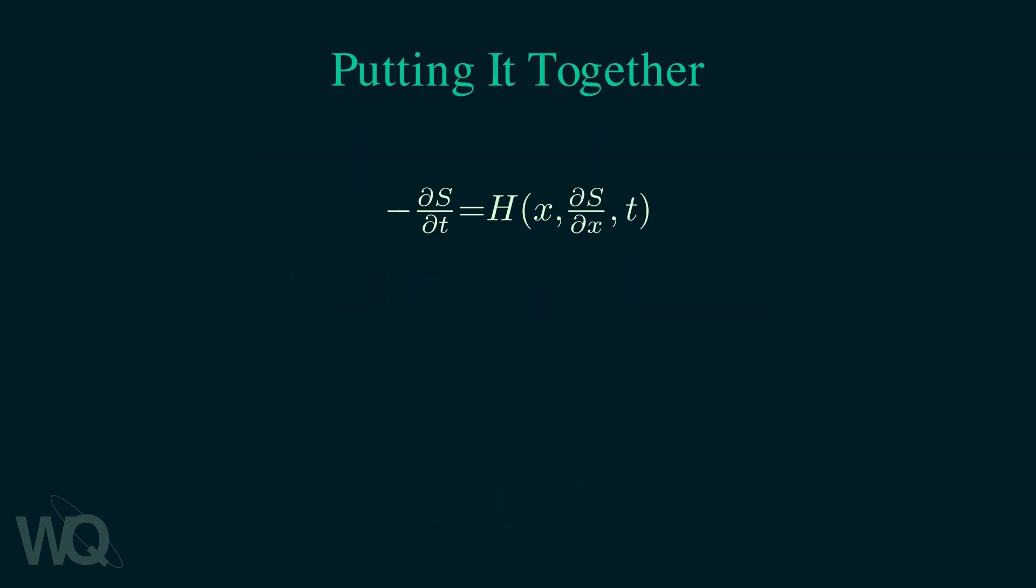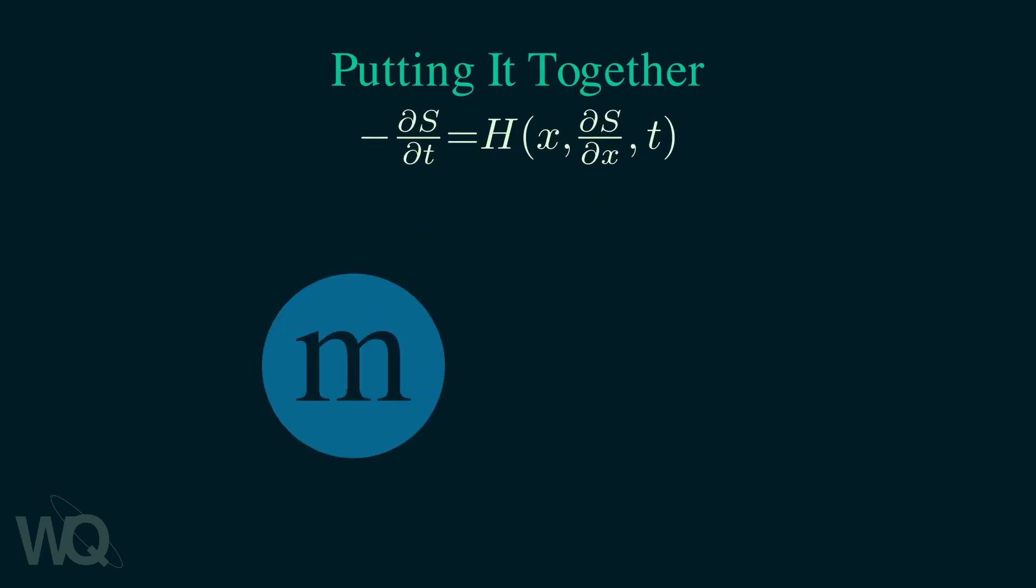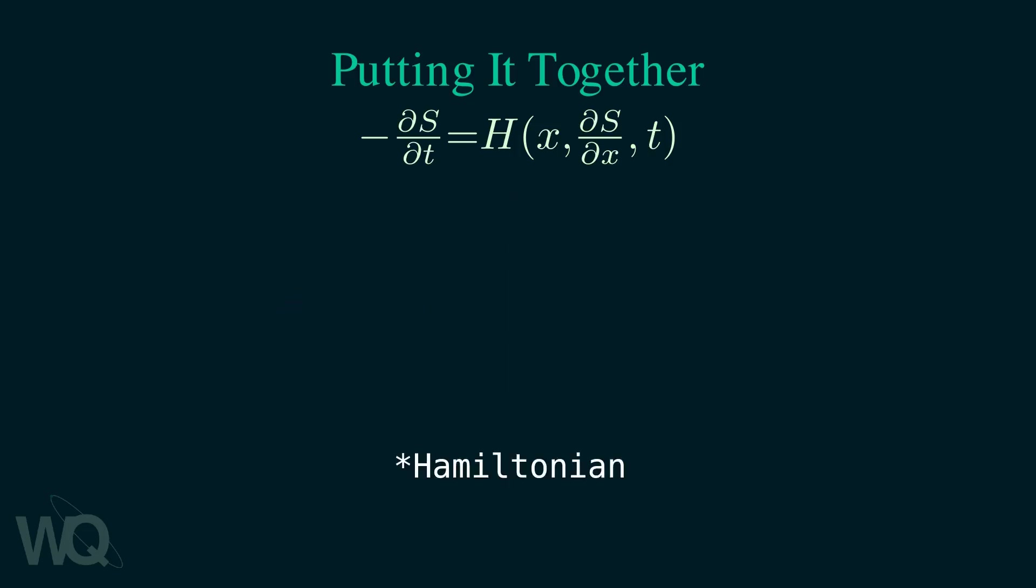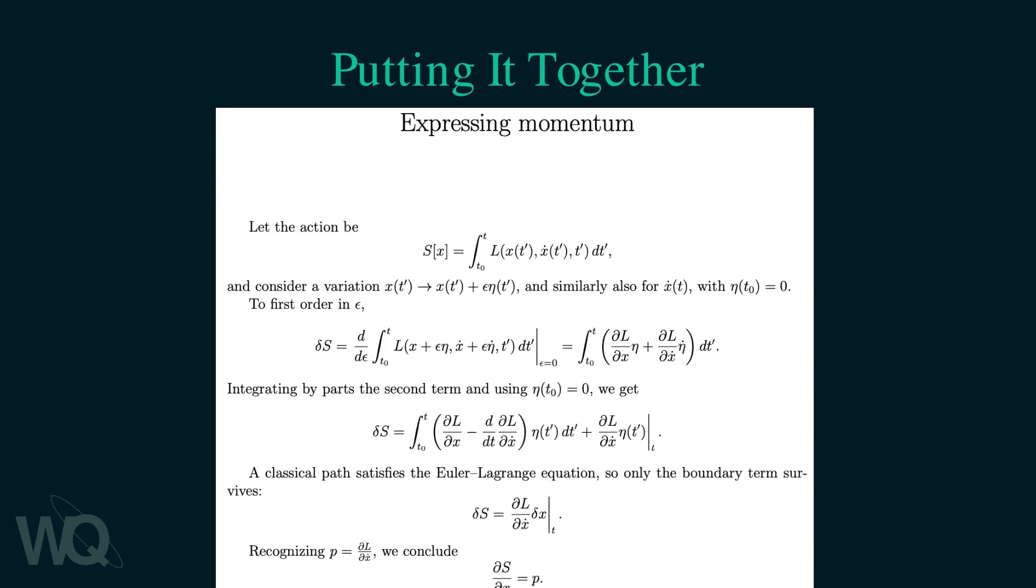At this point Schrödinger directs his attention to a particle with mass m in a conservative force field. The Hamiltonian of such a particle is just the sum of kinetic energy and the potential energy. Usually the Hamiltonian for such a system is written as so, but for this case we will write the Hamiltonian like this. It is the exact same equation just written differently. You can read more about it in this note. Feel free to pause the video and take a look.